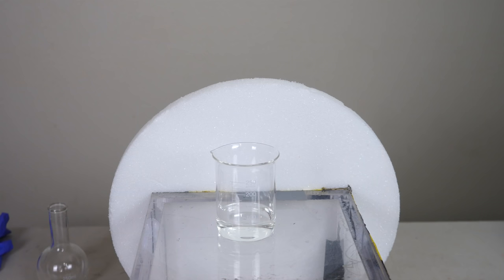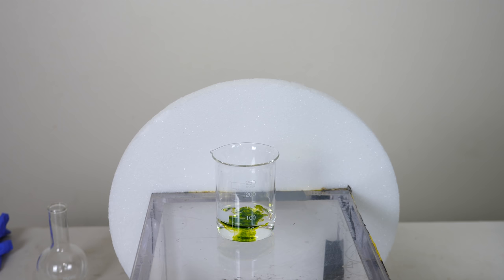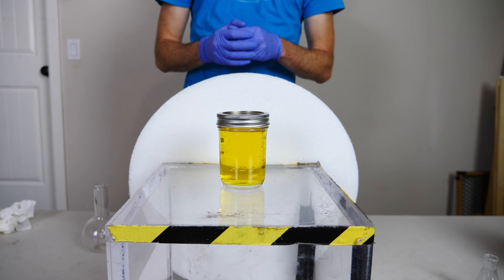Now indigo carmin is a redox indicator. But it can also be used to make a really cool color experiment like this. When indigo carmin is fully oxidized, it's going to be green. But when it's fully reduced, it's going to be yellow. And then there's an intermediate stage where it's going to be red.